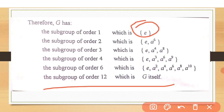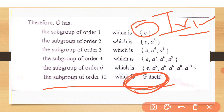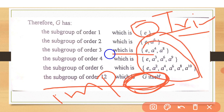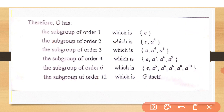This subgroup — the group made by only the identity element — has a special name: it is called the trivial group. The trivial group is the group generated by a singleton set. The whole group G itself is called the improper subgroup. All the other subgroups are called proper subgroups. Thank you so much.